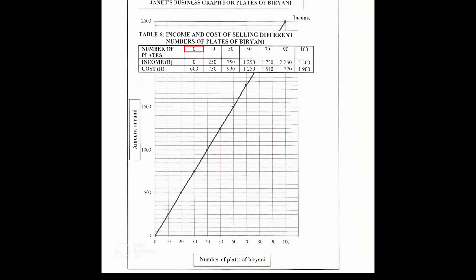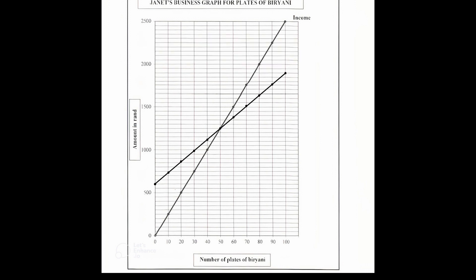From the table: if zero plates are sold, the cost is 600 rand — we place a point at coordinates (0, 600). If 10 plates are sold, the cost is 730 rand — point at (10, 730). If 30 plates are sold, the cost is 990 rand — point at (30, 990). Placing all points on the graph gives the following line graph representing cost versus number of plates sold.